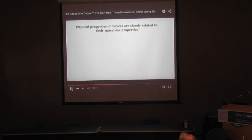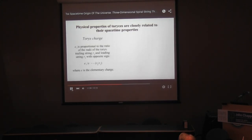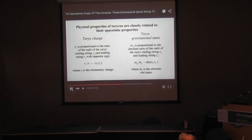Physical properties of Tauruses are closely related to their spacetime properties. Torex charge ET is proportional to the ratio of the radii of the Torex trailing string R2 and leading string R1 with opposite sign, where E is the elementary charge. Torex gravitational mass Mg is proportional to the absolute ratio of the radii R2 and R1, where Mg is the electron rest mass.